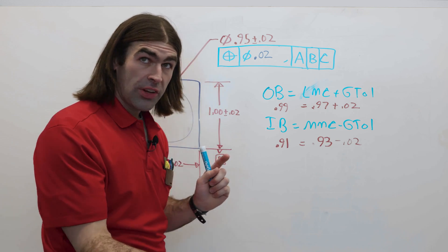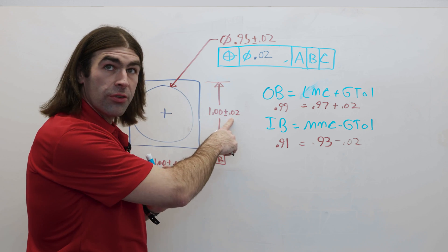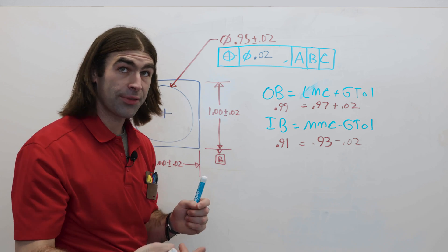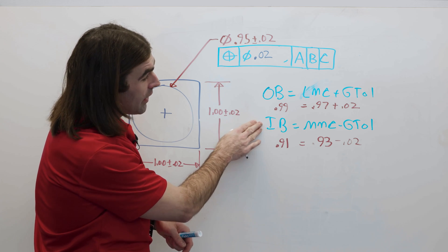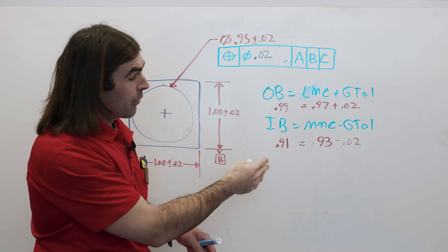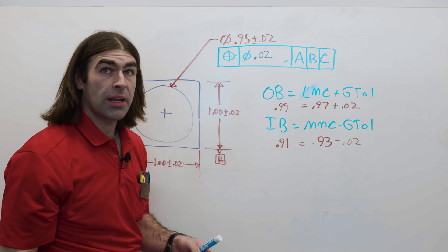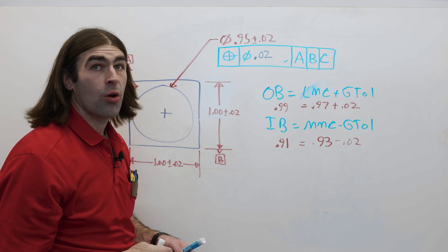Now, to check the wall thickness, 0.99 is going to be larger than the narrowest wall thickness, so we can already tell this tolerance combination would not work. Our inner boundary, which we don't really need for this calculation, but I'll show it anyway, smallest hole minus the geometric tolerance, so 0.93 minus 0.02.